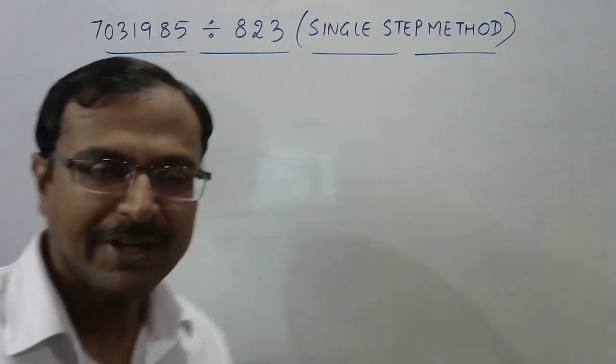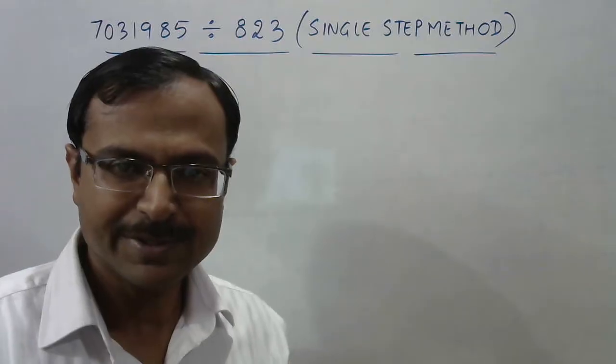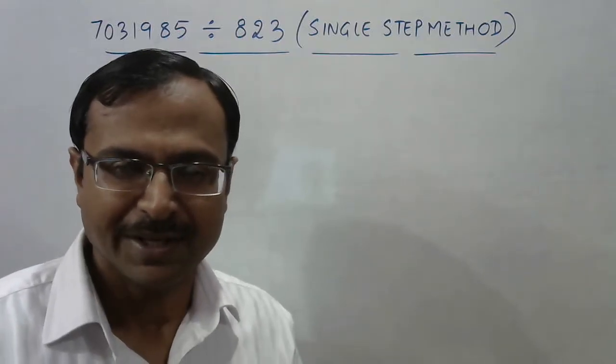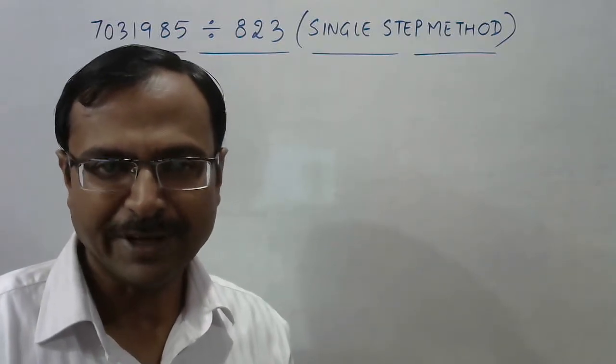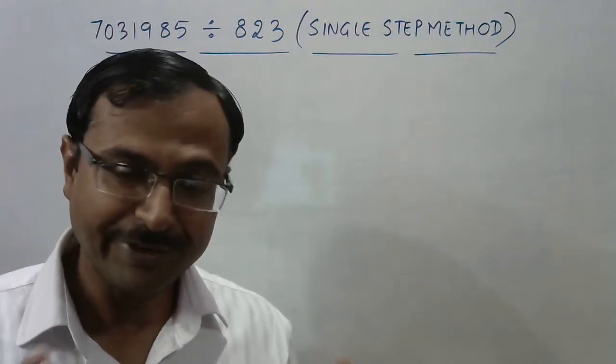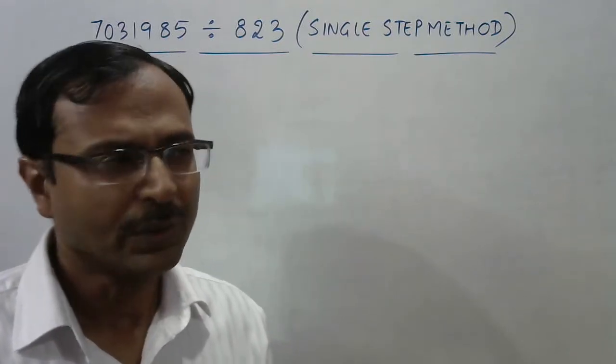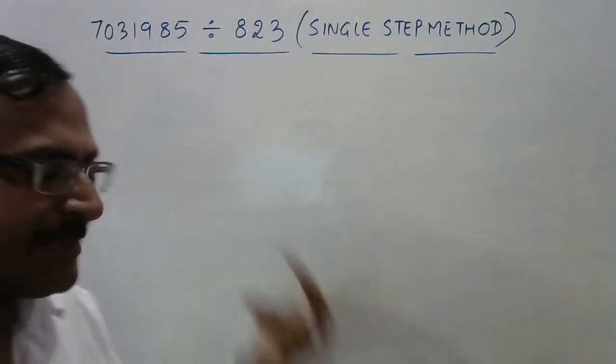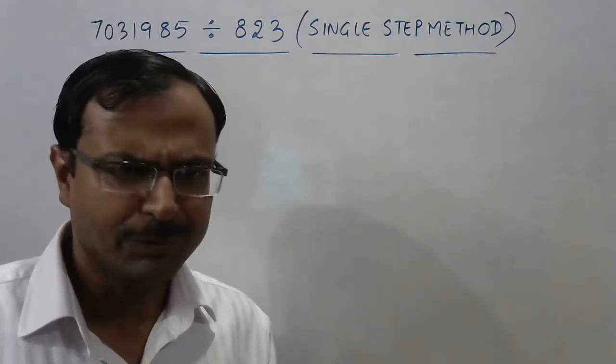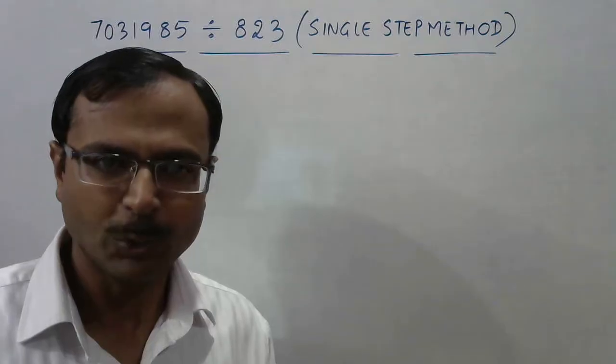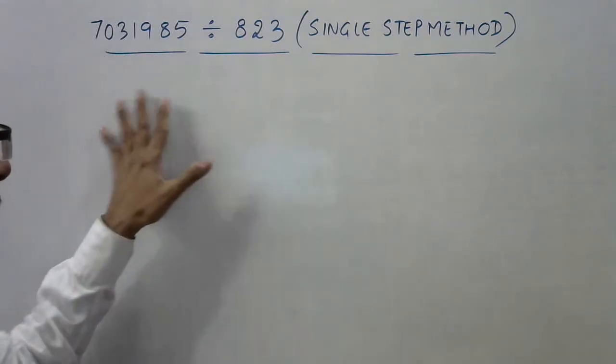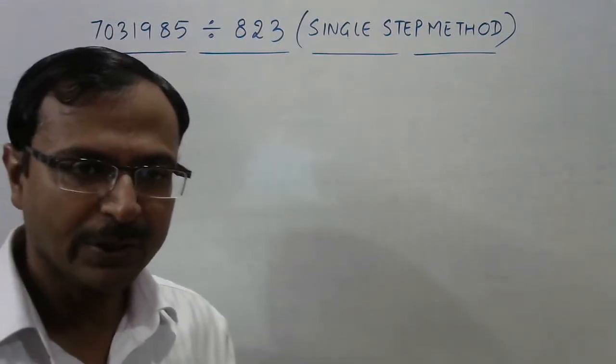Hello friends, when it comes to dividing large numbers by three-digit numbers, it will take a lot of time. Even if you are very good in calculation and your speed is quite good, you are going to take at least 45 seconds or even more to divide such large numbers.